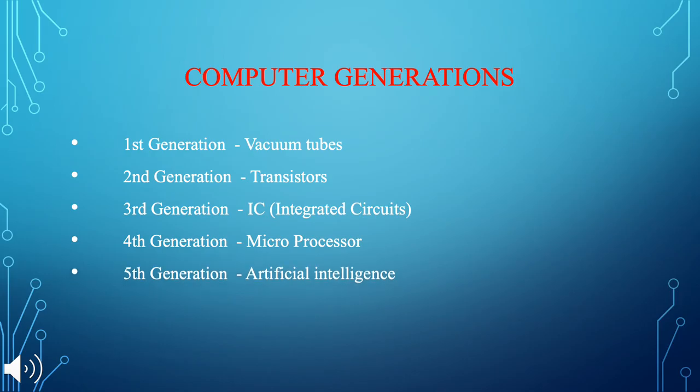There are five generations of computers. The first generation is vacuum tubes, the second generation is transistors, the third generation is IC, the fourth generation is microprocessors, and the fifth generation is artificial intelligence.